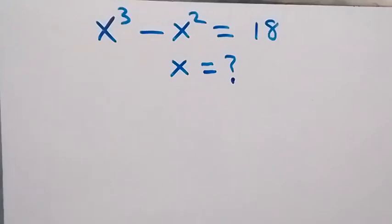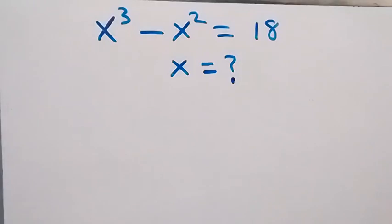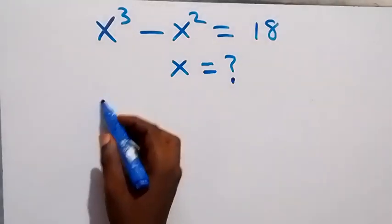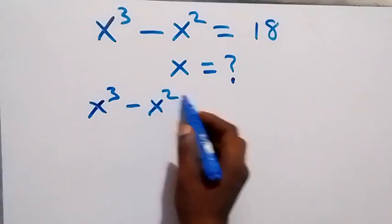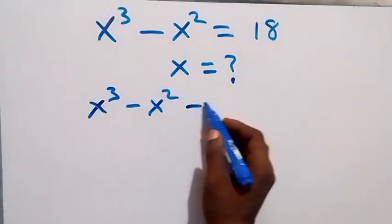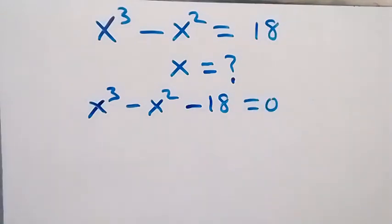Hello, you are welcome. How to solve this nice algebra equation: we have x³ - x² equals 18. We can write this as x³ - x² - 18 equals zero, giving us a cubic equation.